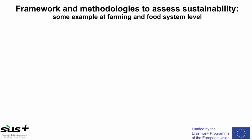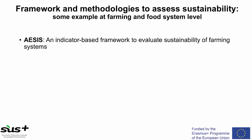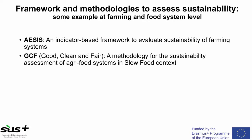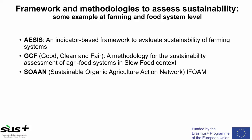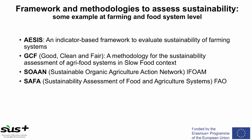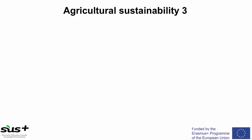At a higher level — at farming and food system level — another framework is the indicator-based IASIS framework for sustainability of farming systems developed by the University of Florence. Another approach was the analysis of the good, clean and fair Slow Food context developed in the Presidia. Then the Sustainable Organic Agricultural Action Network of IFOAM, the SOAN, and finally the SAFA — the Sustainability Assessment of Food and Agricultural Systems — developed recently by FAO.